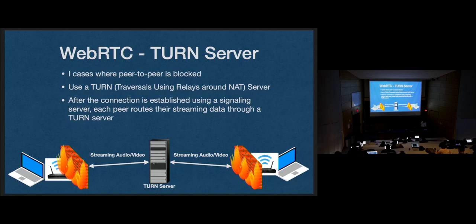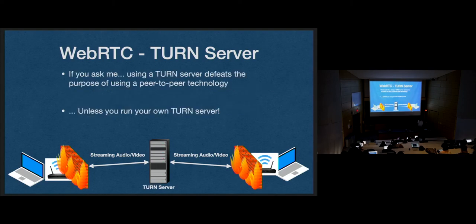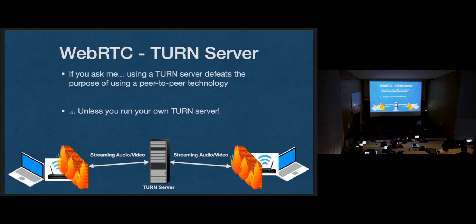For situations with aggressive firewalls or dynamic NATs that keep changing your IP or port, this is where TURN servers come in. TURN servers are optional for WebRTC but required in certain cases — they route all of the peer-to-peer traffic through a server. Instead of a true peer-to-peer connection, you both connect to the TURN server, send your stream to it, and it sends your stream to the other peer. There are open-source TURN libraries where you can run your own TURN server and connect peer-to-peer through your own controlled server.